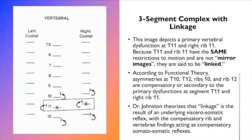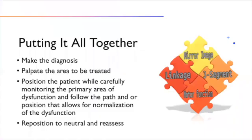I would ask you to understand this is his thought process that we're trying to understand. I'm not necessarily saying that I agree with it or disagree with it, but these were his findings. So putting it all together is actually much easier than the theory that Dr. Johnston gives us. We make a diagnosis, we palpate the area to be treated, we position the patient while monitoring the primary area during the entire process, and we find a position that allows normalization of the dysfunction, and then we reposition them to neutral and reassess our findings. That's a very simple way of stating it.